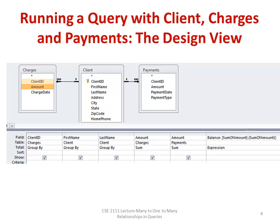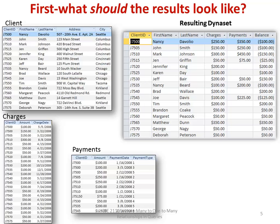If you want to do this, you would pull up the three tables that you need. Since we want to list all clients, we'd have an outer join relative to the client table between the client and the charges, and an outer join relative to the client table between the client and payments table. We would fill in the QBE grid as shown, and when we run that query, we would expect a dynaset with one record per client showing total charges, total payments, and balance due.